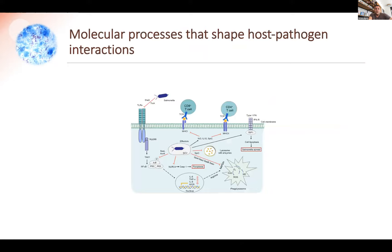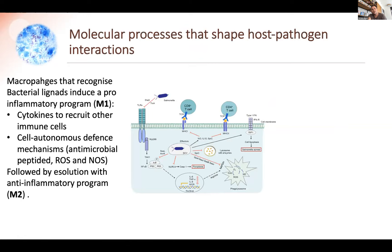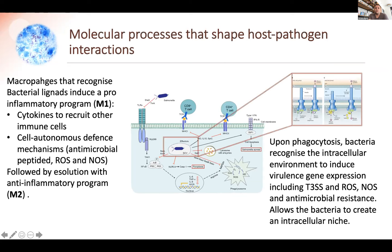Delving into the intracellular environment, molecular mechanisms have been studied for many years. On one side, macrophages try to eliminate bacteria using a pro-inflammatory program including cytokines that recruit other immune cells, and cell-autonomous defense mechanisms like ROS, NOS, and antimicrobial peptides. On the other hand, the bacteria recognizes this intracellular environment and uses a virulence program — in Salmonella's case, the type three secretion system — secreting effector proteins that subvert macrophage processes to establish an intracellular niche.